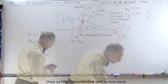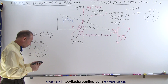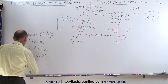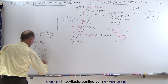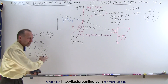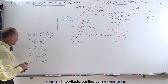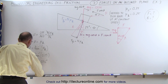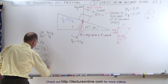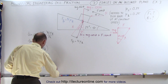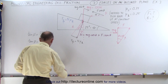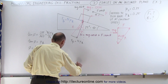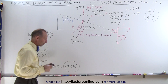In this case mu sub k is 0.25, so phi equals the arctangent of 0.25. Taking the inverse tangent on a calculator, we get phi equals 14.036 degrees. Therefore, theta plus phi equals 25 degrees plus 14.036 degrees, which is 39.036 degrees.